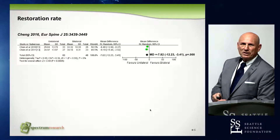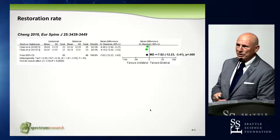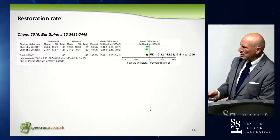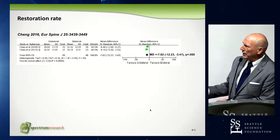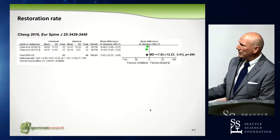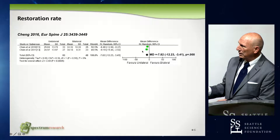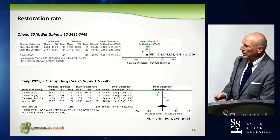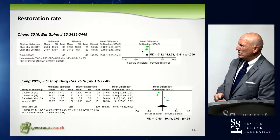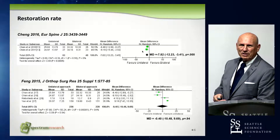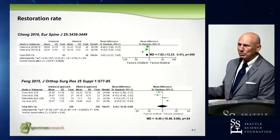Let's take a look at another outcome in these two papers: restoration rate. The Chang 2016 study reported a significant difference in restoration favoring the unilateral. But the 2015 study showed no difference in restoration. Again, which do you believe?